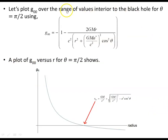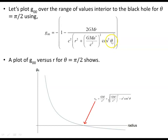Let's look at a plot of the time component of the metric in Boyer-Lindquist coordinates over a range of values of R, both interior and exterior to the black hole. We need to set theta to a fixed value for a two-dimensional plot, so we set theta to pi/2 — we'll look at the equatorial plane. Throughout this video, theta is set to pi/2.